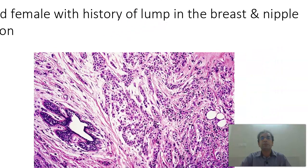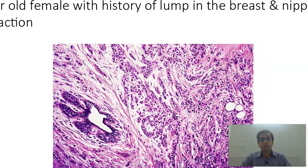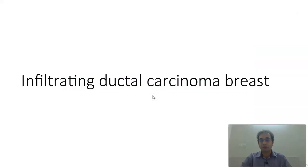A 55-year-old female with a history of lump in the breast and nipple retraction. What you are finding here are the ducts, and you find infiltrating nests of tumor cells — there is infiltration everywhere. Some tubule formation is present and the nuclei look very hyperchromatic. So this is going to be an infiltrating duct carcinoma of the breast.